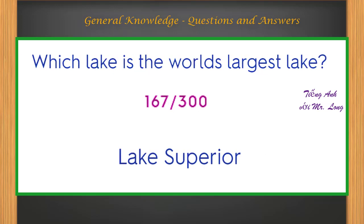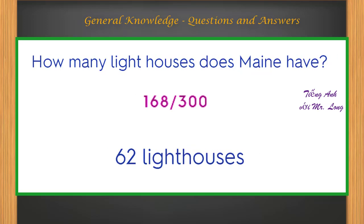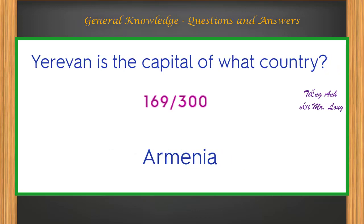Which lake is the world's largest lake? Lake Superior. How many lighthouses does Maine have? Sixty-two lighthouses. Yerevan is the capital of what country? Armenia.